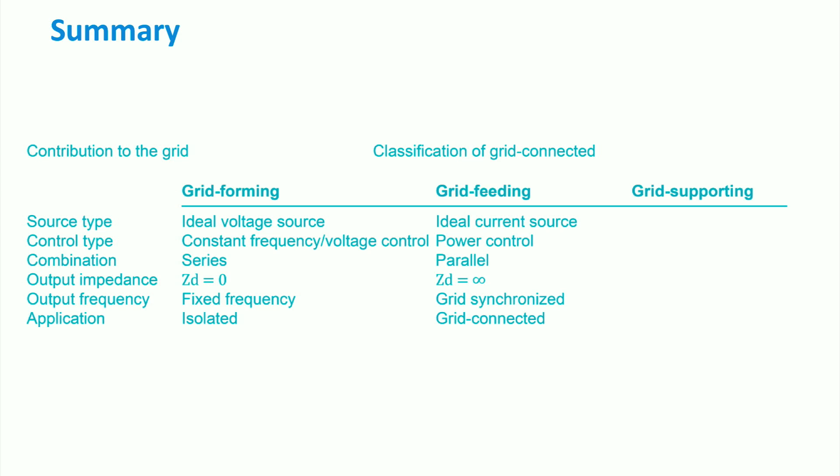In case of the grid-feeding converter, the source can be represented as an ideal current source, and its control is based on both active and reactive power. Unlike the grid-forming type, the grid-feeding converter shows an output frequency that is synchronized with the grid. Finally,